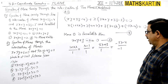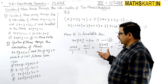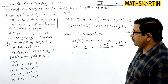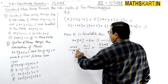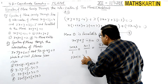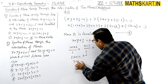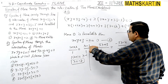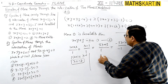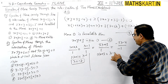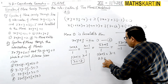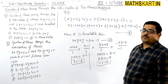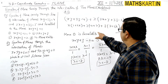Equating the first two ratios: 2 lambda plus 1 equals lambda minus 1, giving lambda equals minus 2. Checking with the next pair: 3 lambda plus 3 equals lambda minus 1 gives 2 lambda equals minus 4, so lambda equals minus 2. Both conditions give lambda equals minus 2.